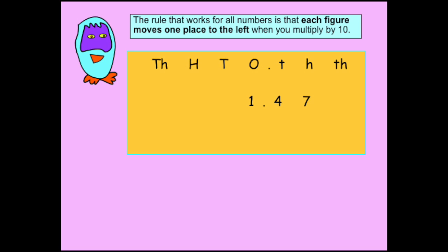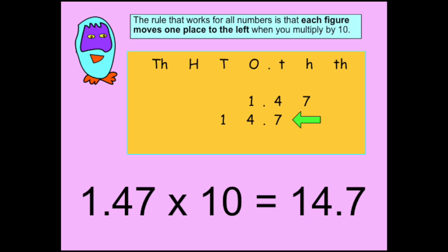This one looks difficult, but 1.47 times 10 just follows the same rules. The 1 moves into the tens column, the 4 goes into the ones column, and the 7 moves into the tenths column. So the answer is 14.7.